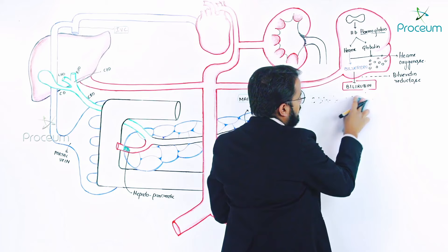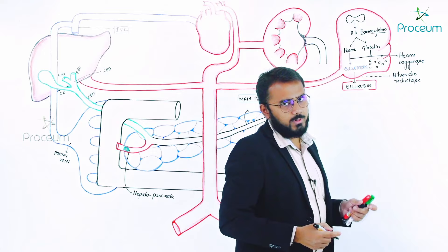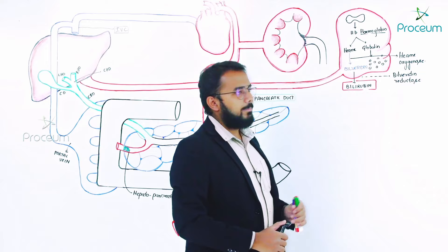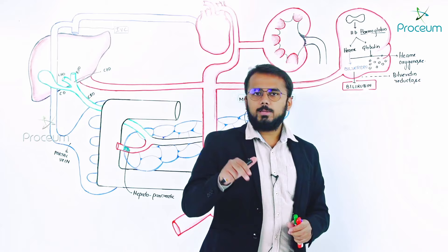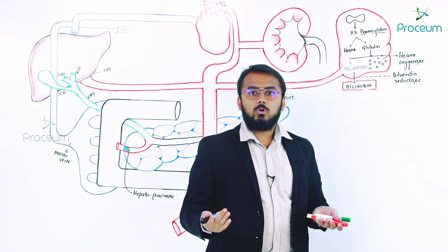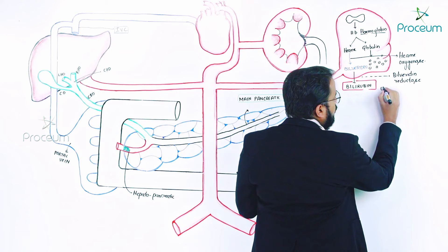A neonate is said to be having jaundice when the serum bilirubin is more than 5 milligrams per dL. What we have produced is bilirubin — and this bilirubin is unconjugated bilirubin, simply written as UB, which stands for unconjugated bilirubin.